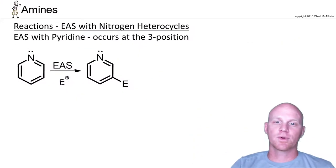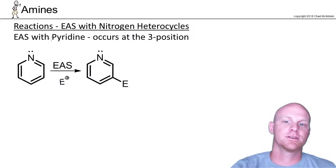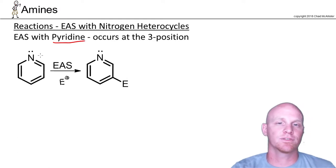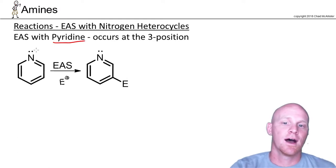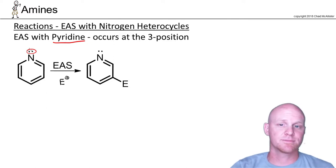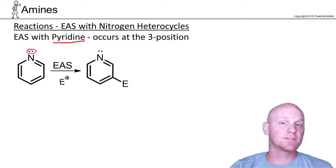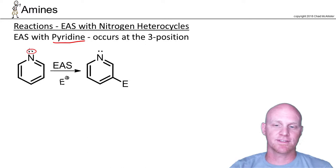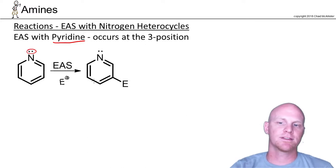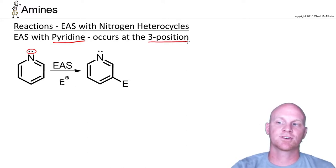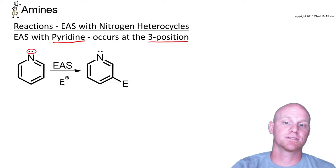Another heterocycle we're going to look at is pyridine, which we've seen before. In pyridine, the lone pair is not part of the aromatic pi system, making it more basic than pyrrole. The key point here is that when we do EAS reactions on pyridine, it's going to occur at the three position.